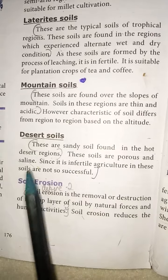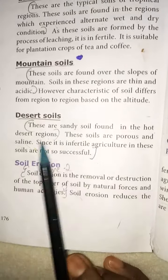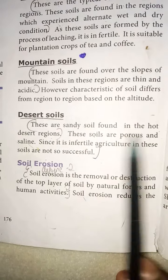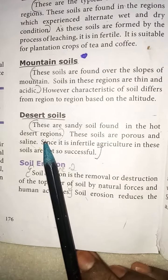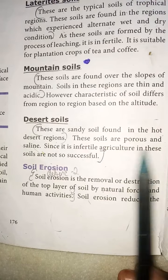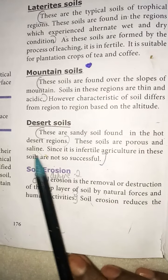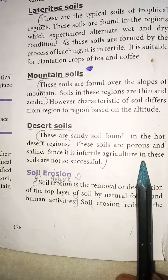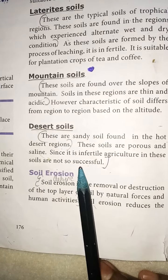Desert soil: these are sandy soils found in hot desert regions. These soils are porous and saline. Since they are infertile, agriculture in these soils is not very successful.